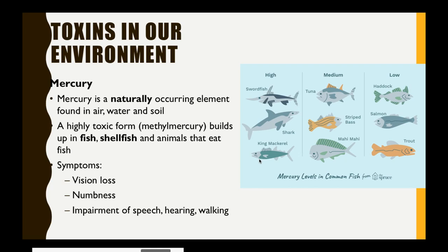I don't eat shark or swordfish very often, so I don't really have to worry about those. However, I do want to make sure my tuna consumption, as well as my salmon and trout consumption, is monitored. Some symptoms of mercury poisoning include vision loss, numbness, and impairments of speech, walking, and even hearing — very serious symptoms that can last for an individual's entire lifetime. There have been regions in Japan that have had high doses of mercury where entire towns were impacted by mercury poisoning, called Minamata disease. This is still happening in different regions when large amounts of mercury are dumped into the water.